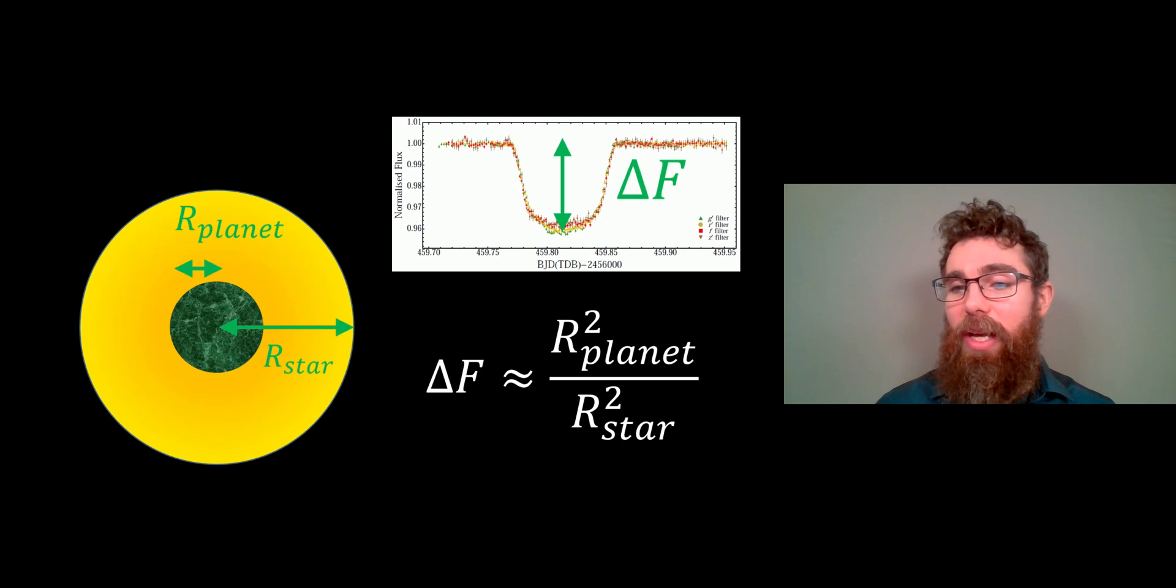In the equation there, you've got delta F, which is your change in flux or brightness of the star. If the star dims down by 3%, then that is going to be our delta F, which would be 0.03, and that equals the square of the radius of the exoplanet over the square of the radius of the star.